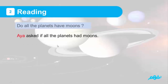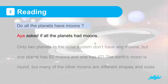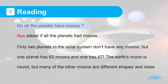Aya asked if all planets had moons. Only two planets in the solar system don't have any moons. But one planet has 62 moons and one has 67. The Earth's moon is round, but many of the other moons are different shapes and sizes.